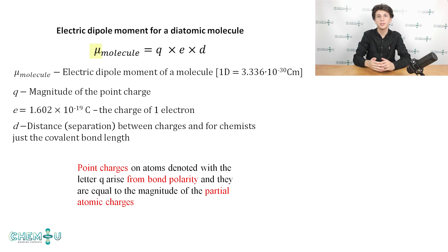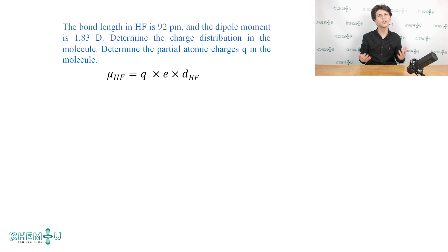The SI unit of mu is the coulomb meter, but for convenience, mu is usually given in units of Debye. As I have already mentioned, the point charges on atoms denoted with the letter Q arise from bond polarity and they are equal to magnitude of the partial atomic charges that we have just discussed. For a better understanding of this concept, let's solve together a problem given on the slide. The bond length in HF is 92 pm and the dipole moment is 1.83 Debye. Determine the partial atomic charges in the molecule.